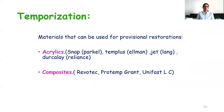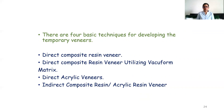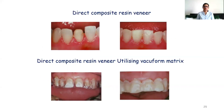In temporization, we can use acrylic or composites. There are four basic techniques for developing temporary veneers. Temporaries usually are not necessary, but in several clinical conditions — like excessive reduction done to align the tooth or to prevent supra-eruption — temporaries may be required. The first technique is the direct composite resin veneer: composite resin material is directly placed on the prepared tooth without etching, or in some cases, spot etching is done on the labial surface for increasing retention.